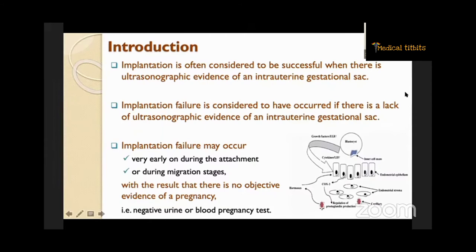Implantation is often considered to be successful when there is ultrasonographic evidence of an intra-uterine gestational sac. Implantation failure is considered to have occurred if there is a lack of ultrasonographic evidence of an intra-uterine gestational sac. Implantation failure may occur very early during the attachment or during migration stages, with the result that there is no objective evidence of a pregnancy — that is, if you do a pregnancy test, it is negative.